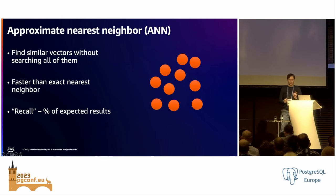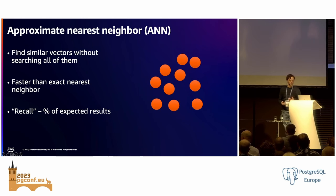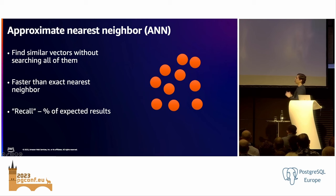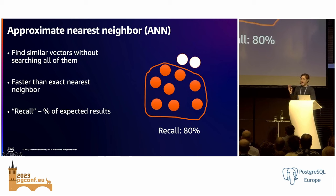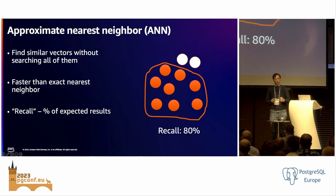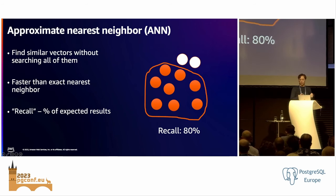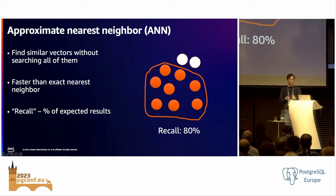But with approximate nearest neighbor search, we're only approximating it. We might not actually be getting our 10 closest neighbors based upon the indexing method, the embedding model, or other factors. For example, in an exact nearest neighbor search I expect these 10 vectors, but in my approximate nearest neighbor search I only get 8 out of 10 — my recall is 80%. You need to be mindful of this when doing vector searches, because while you can build an index that is relatively quick, you might not get the results you expect and will need to tune the query. Typically, to increase recall, you'll decrease performance because you'll have to search more vectors.